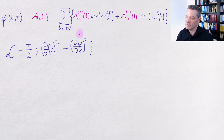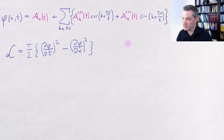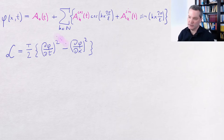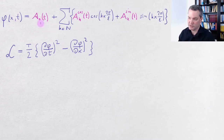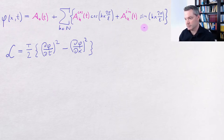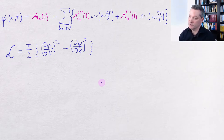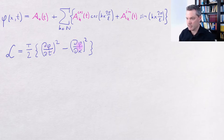Let's now look at how the Fourier coefficients will behave dynamically in the framework of classical mechanics. Rather than directly plugging the field expansion into the equation of motion, it will be more useful to first express the action in terms of our new variables. For that, we need to plug the field expansion into our Lagrangian density, and the first step is to express the partial derivatives of the field with respect to time and with respect to space in the new variables.